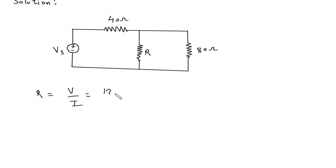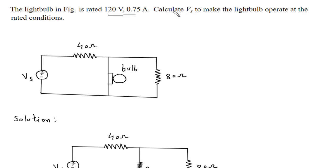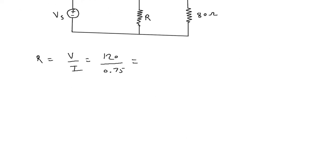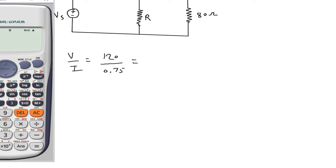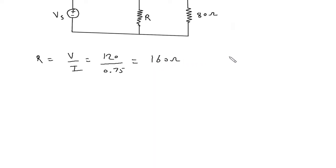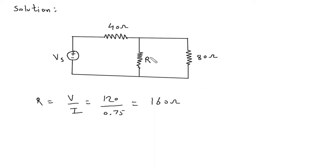The value of V is 120 and the value of current is 0.75. So this will be 120 by 0.75, which equals 160 ohm. 160 ohm is the value of resistance.